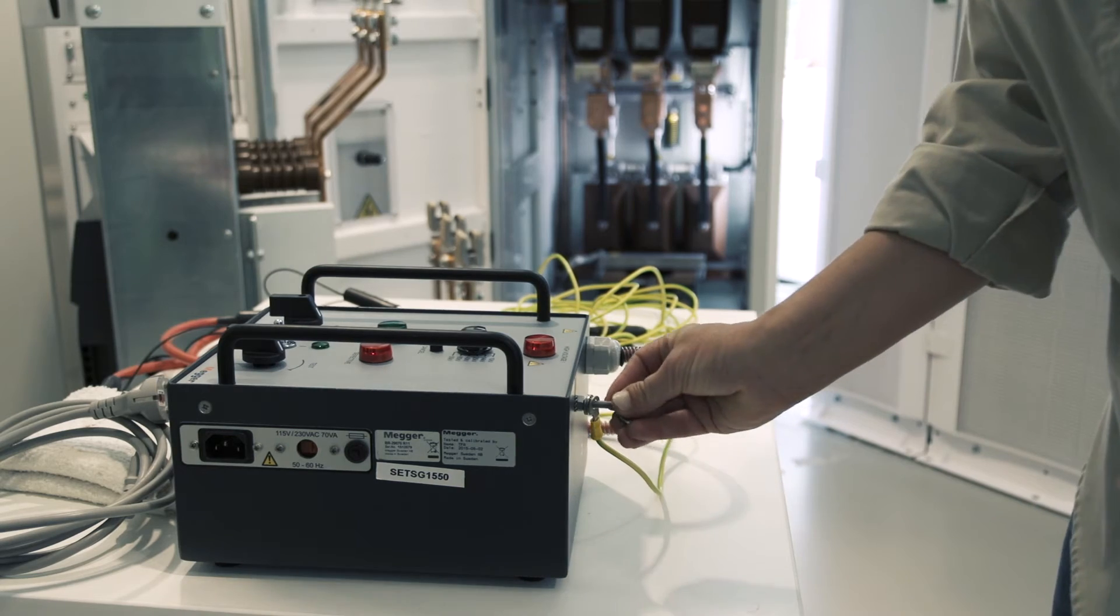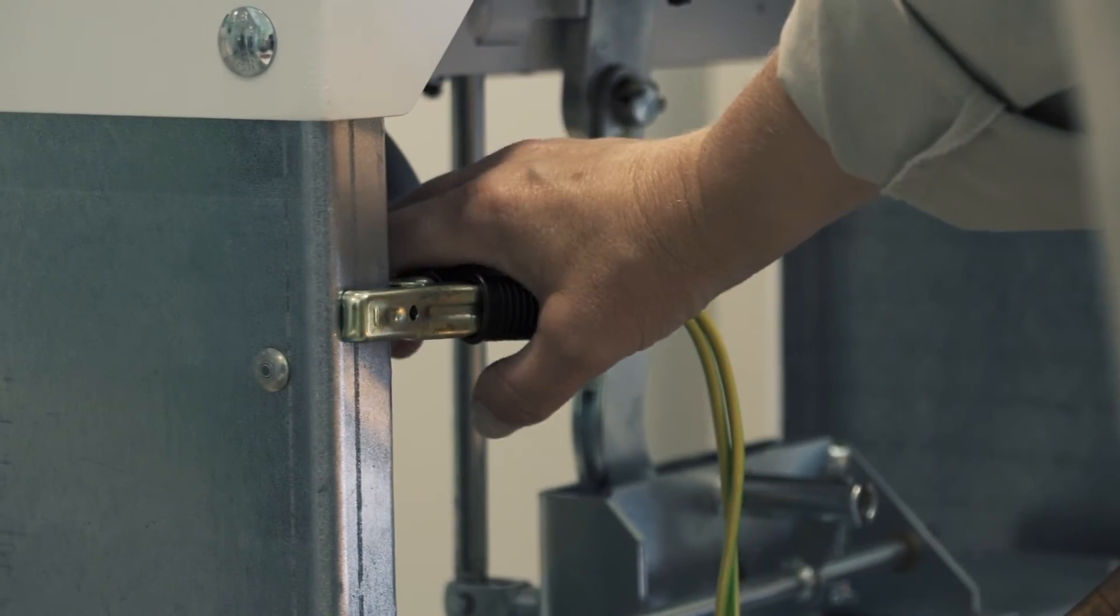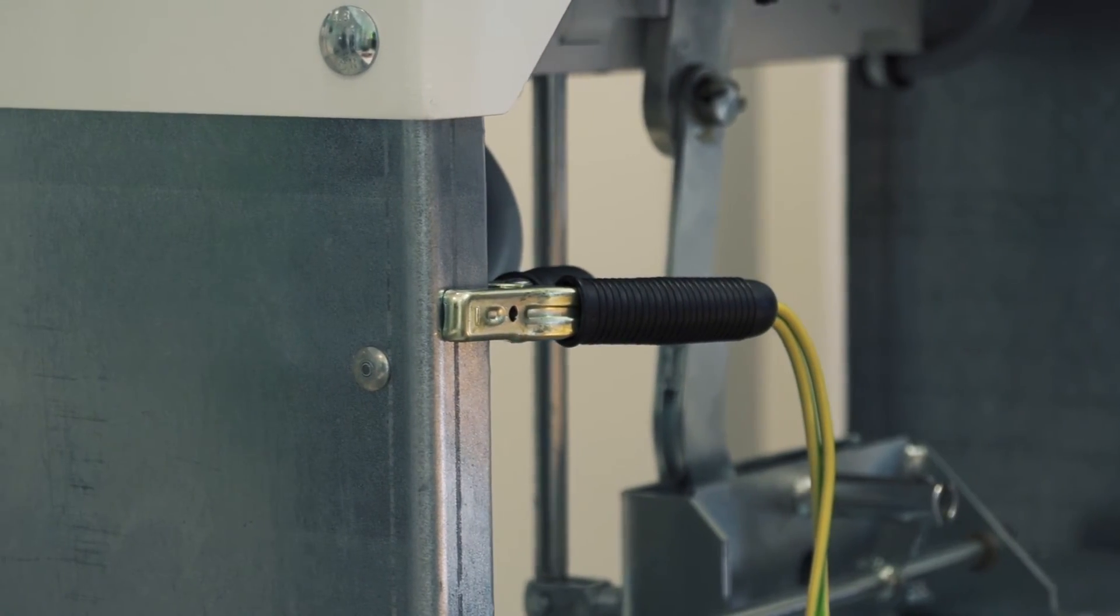A typical test of a vacuum circuit breaker follows a simple sequence. Make sure the circuit breaker is secured and safe to work upon. Put it in the open position.